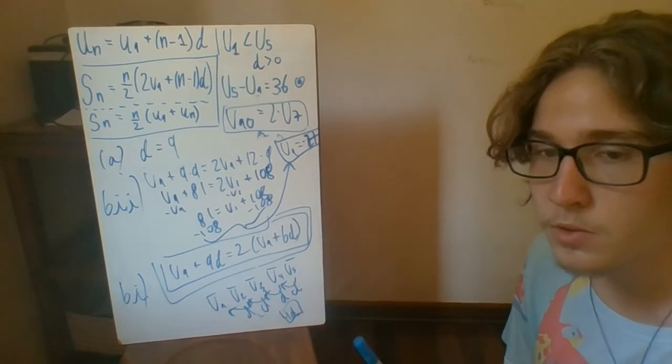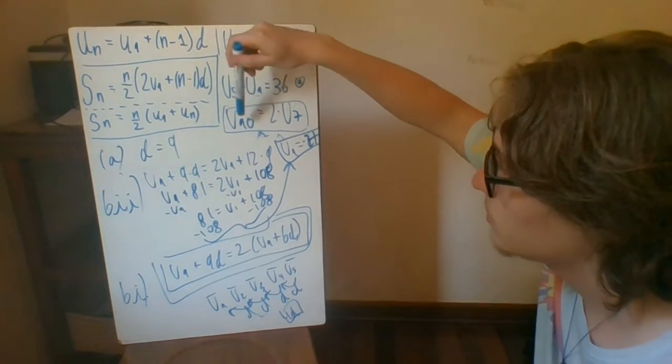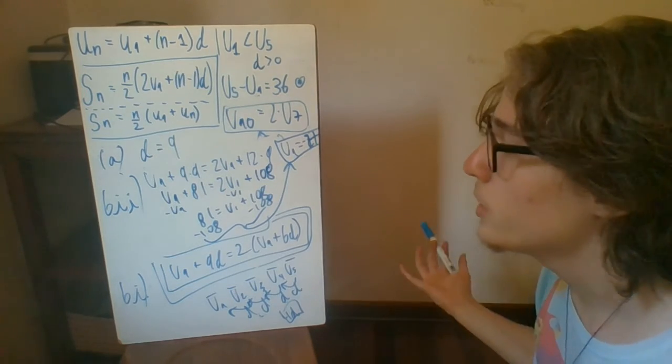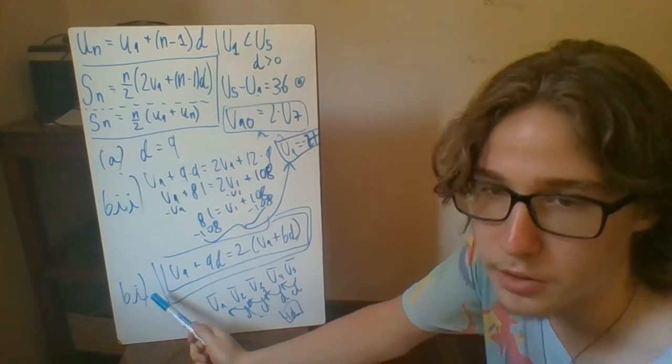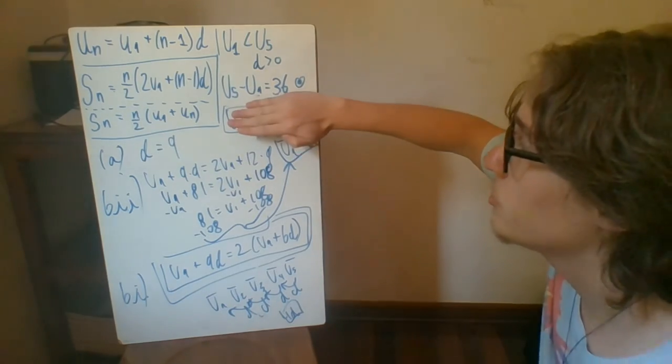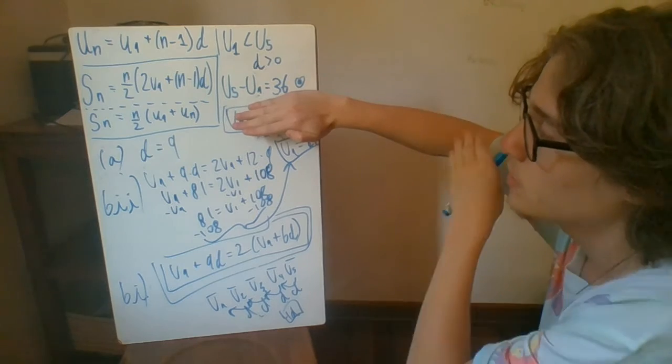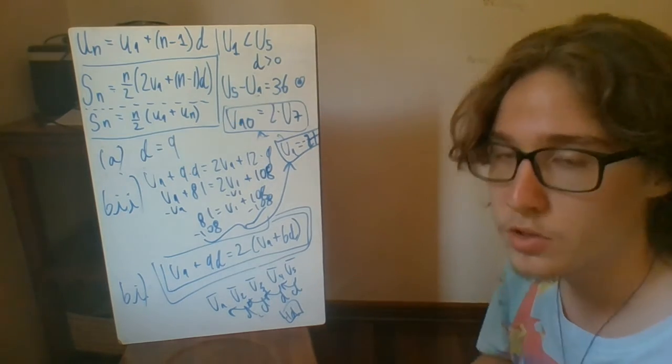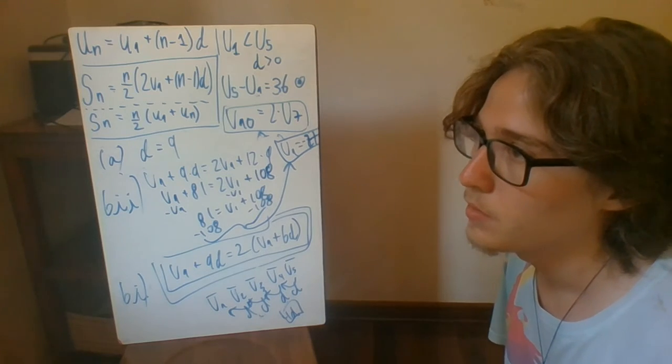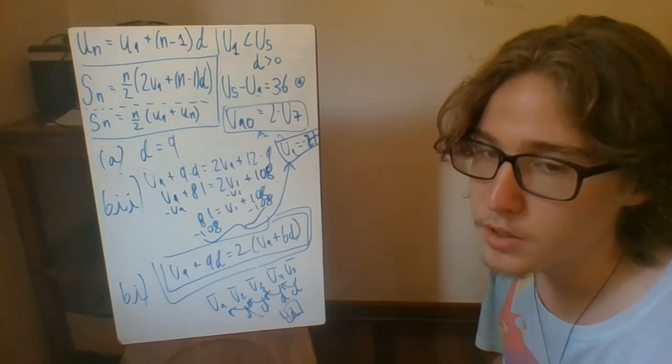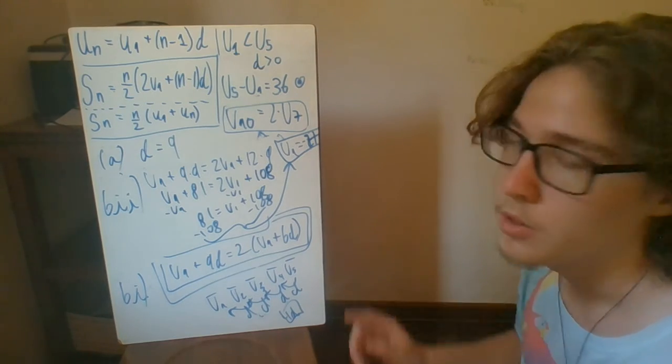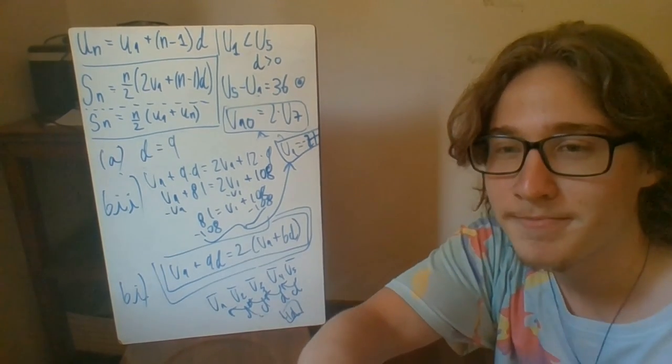Also, you always want to use the piece of information that they give you without using that u10 equals two times u7, there was no way we're going to do b part one. And so sometimes you can get lost thinking of only the first piece of information that they gave us and the first formulas. But really, if there's new piece of information, at least in IB, they're not going to try to trick you with it most of the time. So always find a way to use that information. I hope it helped.